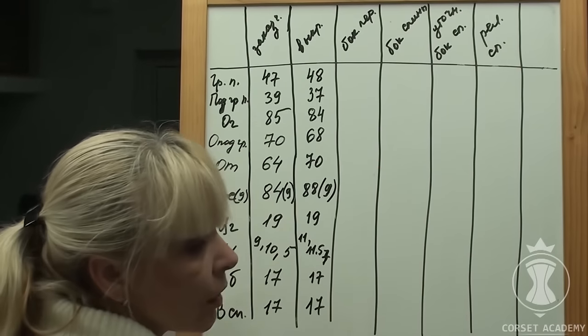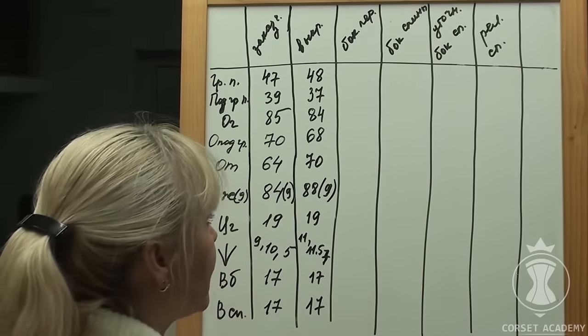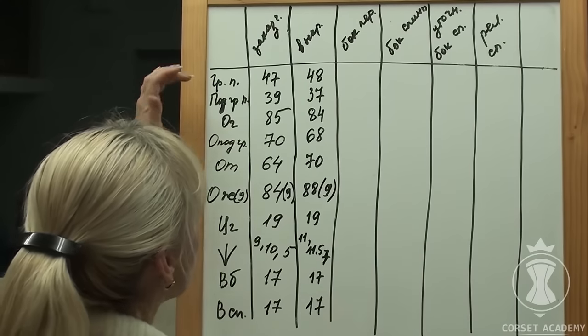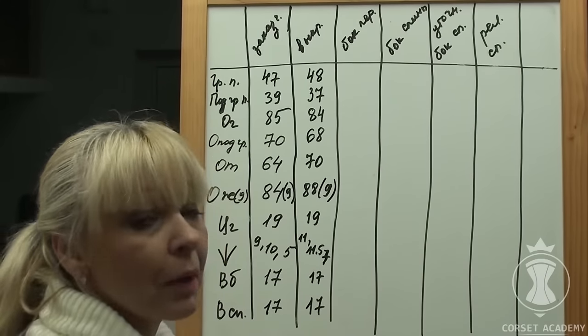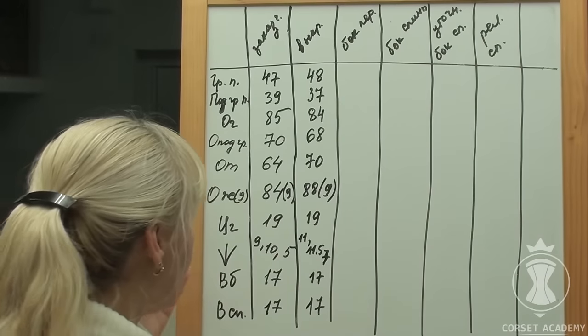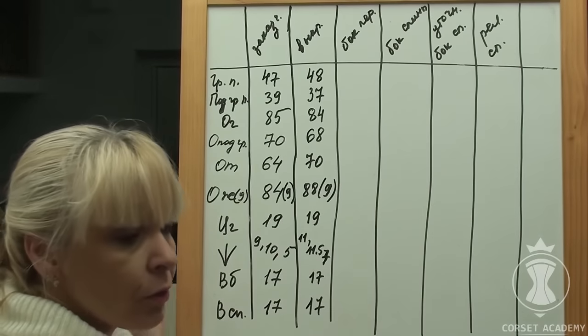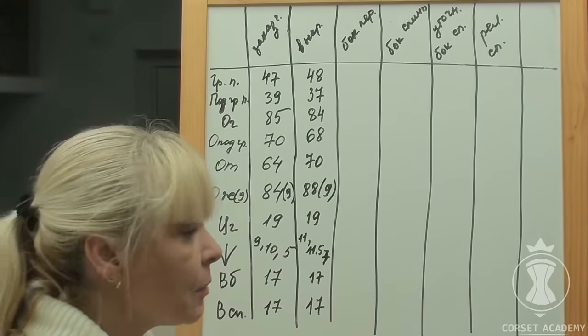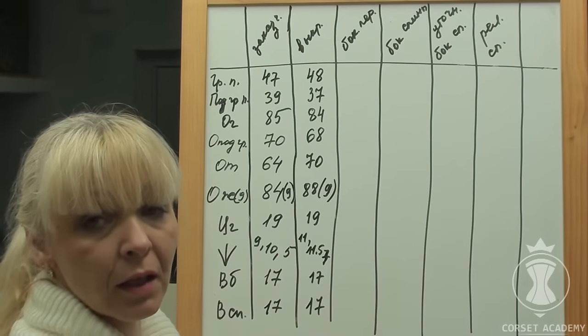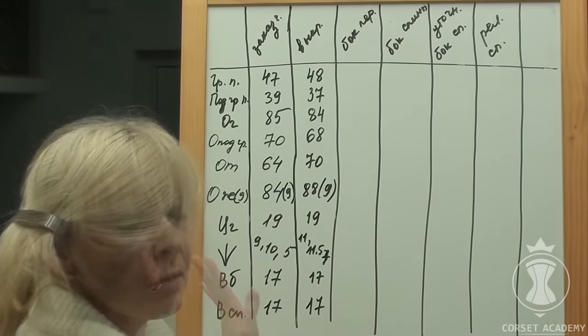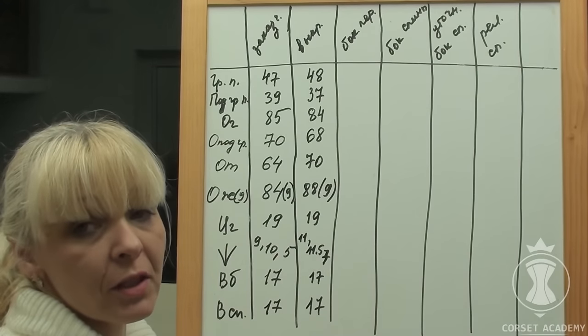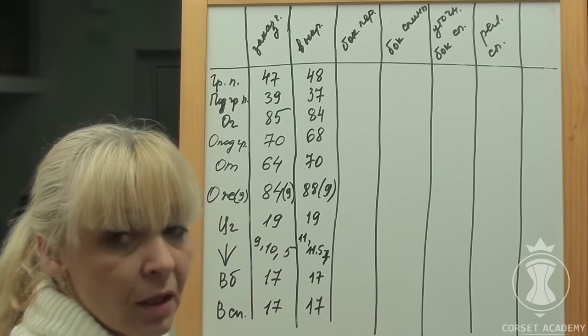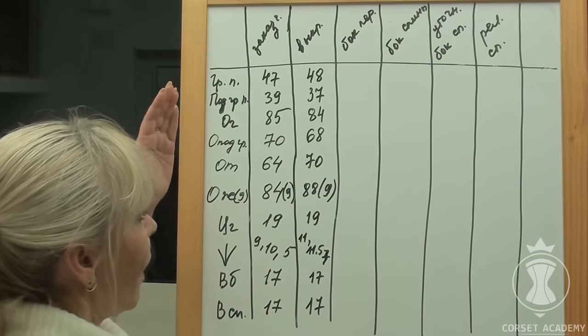The first measurements you should pay close attention to are bust front and underbust front that allow you to determine the location of the side seam, and then the bust middle measurement that shows if you need to alter the central front piece. All calculations are recorded in the fourth column of the table. Both bust middle measurements coincide at 19 cm, which means there are no alterations on the central front piece.